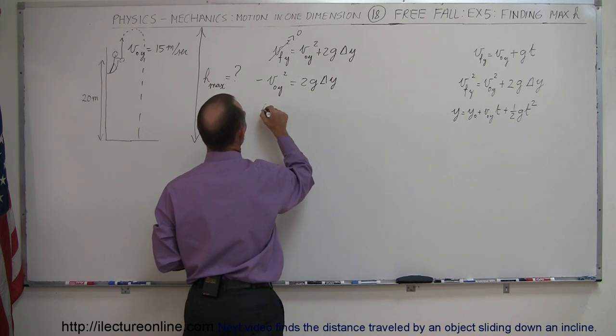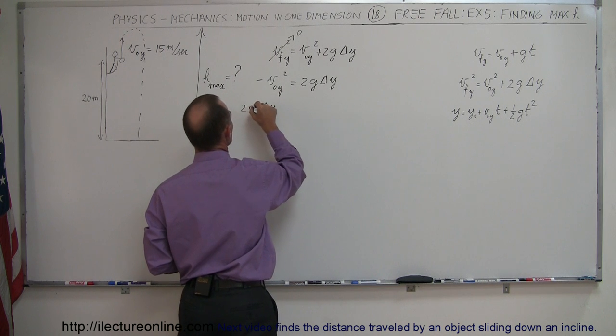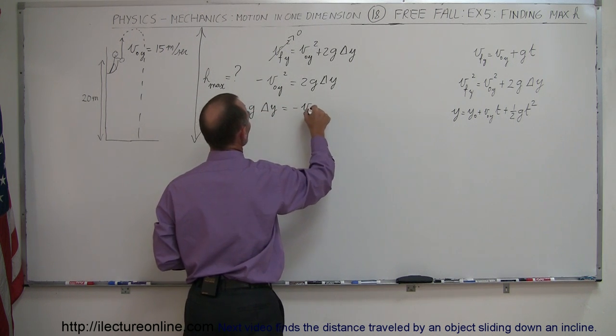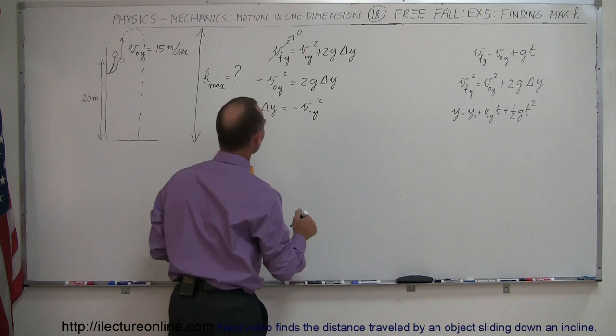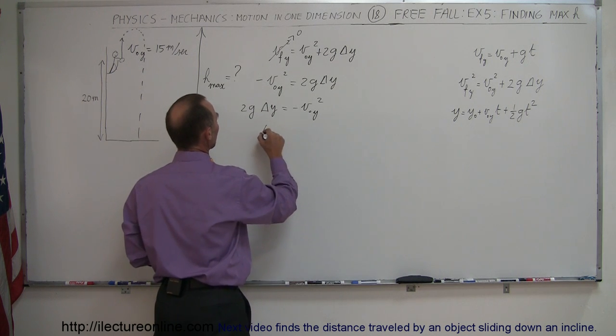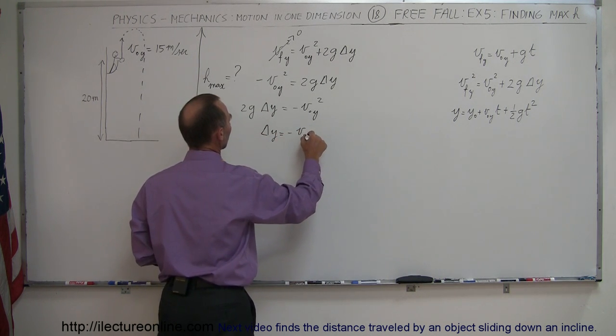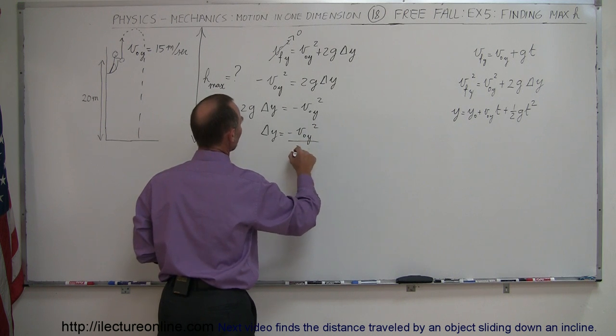Moving the equation around so we have delta Y times 2G equals a minus V initial Y squared like that, and then divide both sides by 2G. We get delta Y is equal to minus V initial Y squared divided by 2G.